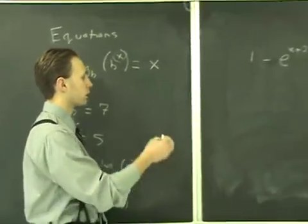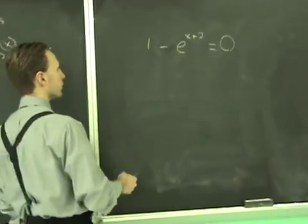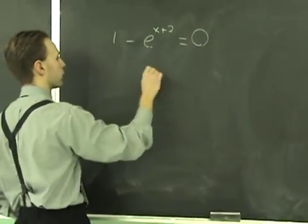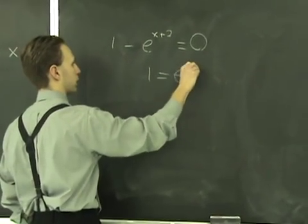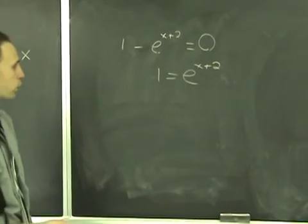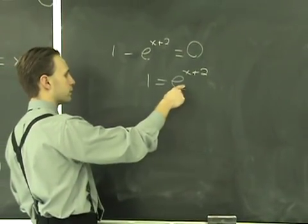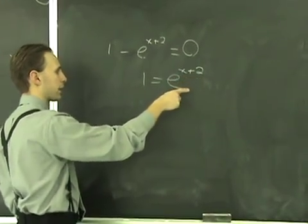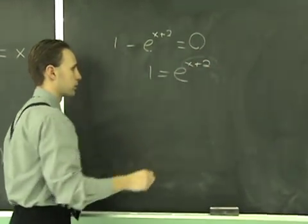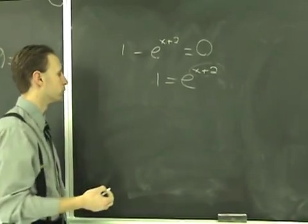Second example here, not a whole lot different. Solve this. What do you do? Well, you have to somehow get it so that the base and the exponent are by themselves. So I'll just bring this over. 1 equals E to the X plus 2. And you can kind of see it here if you're quick enough that you're raising E to some power and the answer has to be 1. So you know that this expression here has to be 0 because E to the 0 is 1.